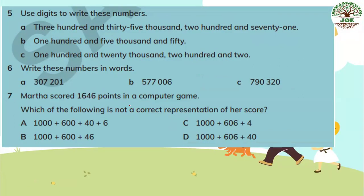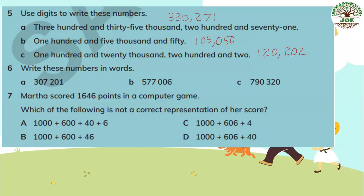Number five: use digits to write these numbers. Part A: three hundred and thirty-five thousand, one hundred and twenty-five thousand, two hundred and seventy-one. Part B: one hundred and five thousand, one hundred and five thousand and fifty. So there is no hundreds digit.